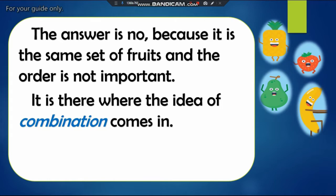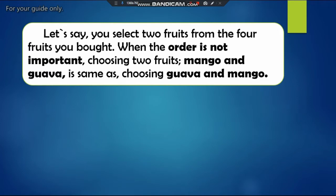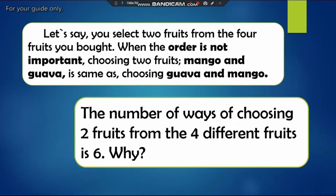It is the same set of fruits and the order is not important. It is there where the idea of combination comes in. In this lesson, we will illustrate what combination is. If you select two fruits from the four fruits you bought, when the order is not important, choosing two fruits — mango and guava — is the same as choosing guava and mango. Thus, the number of ways of choosing two fruits from four different fruits is six.